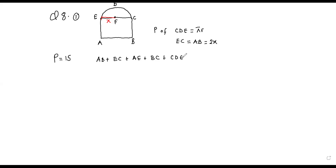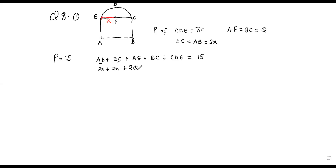So AB + EC + AE + BC + arc CDE should give us 15, which is the total perimeter since we are given 15 meters of material. We know that AB and EC are each 2x. AE and BC we don't know, but they are equal, so let AE = BC = q. So we have 2q plus the arc CDE which is πx, and this whole thing equals 15.